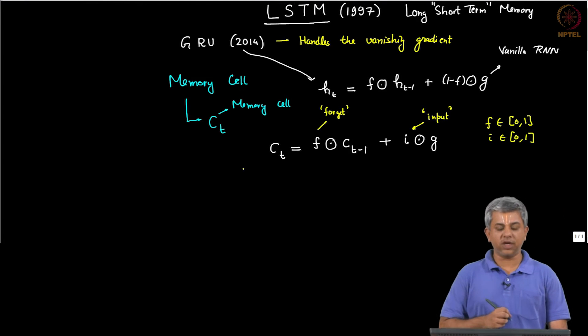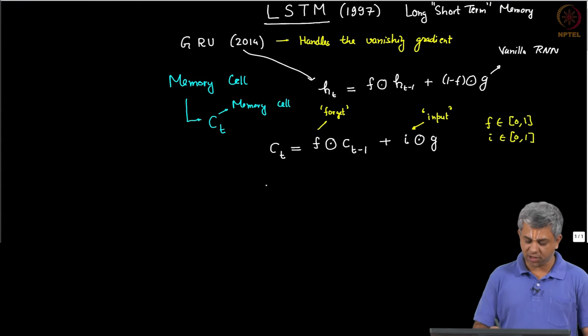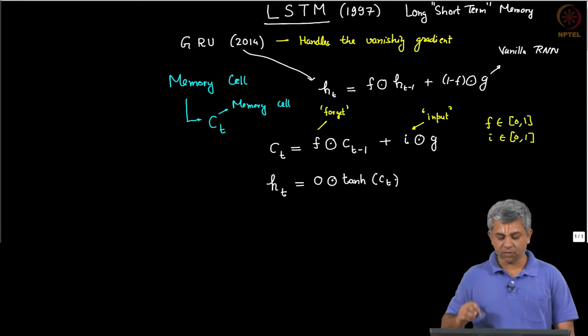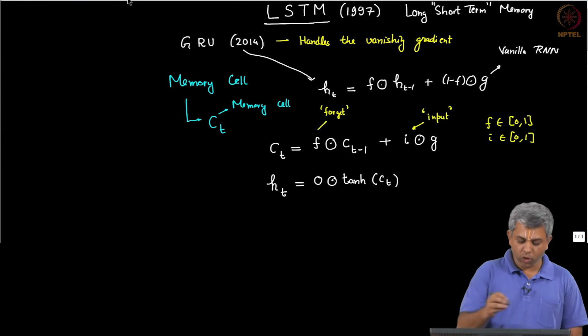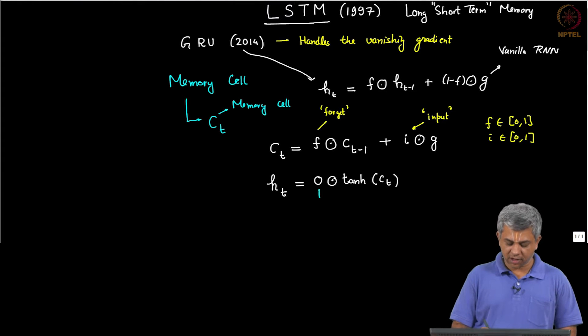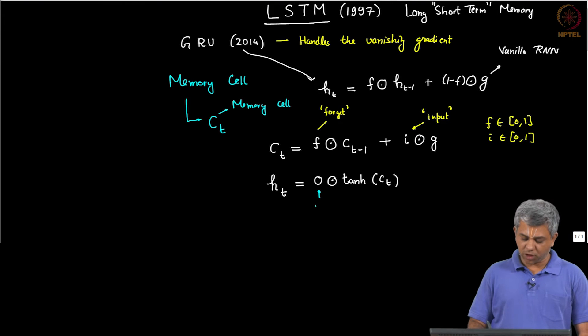So what happens to H? H is the output that we are actually interested in. H is now given as O times tanh of C_t, and O once again is another valve or another gate which also belongs to [0,1], and it is called the output gate.